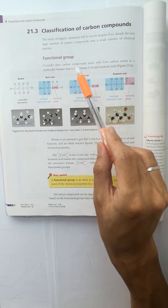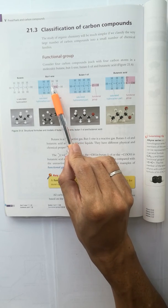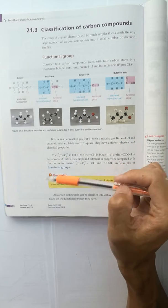The functional group, for example, if they have the C=C double covalent bond, then they behave similarly.